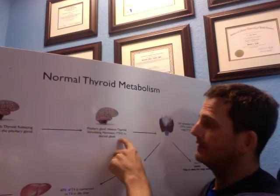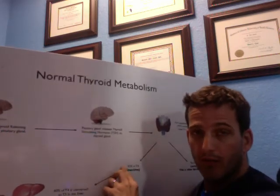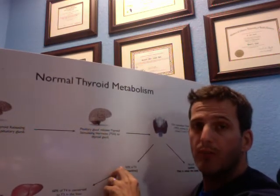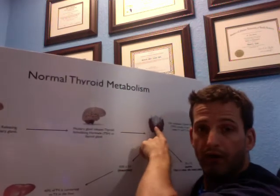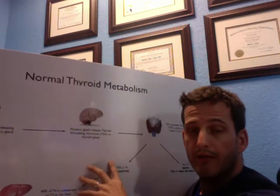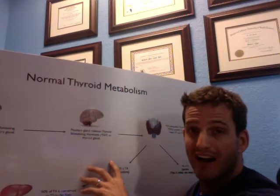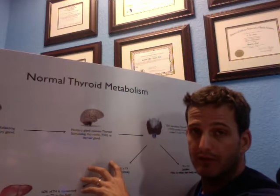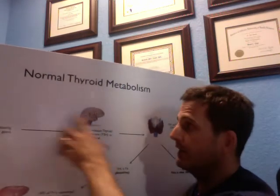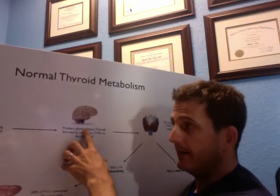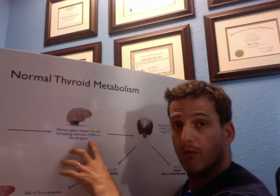The pituitary will release TSH, and that will cause the thyroid to release more T4 and more T3. When we have a primary hypothyroid problem — basically meaning the thyroid is falling asleep on the job — typically what happens is the TSH gets higher, because the body is cold and the hypothalamus keeps saying, 'Go tell those guys to work harder,' really beating up the pituitary to get the thyroid to work more and more.